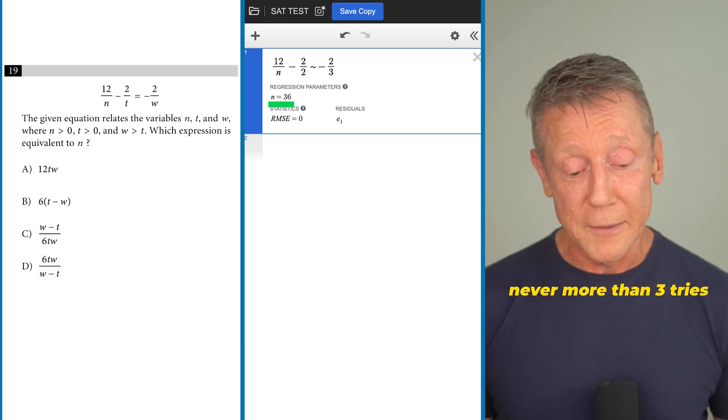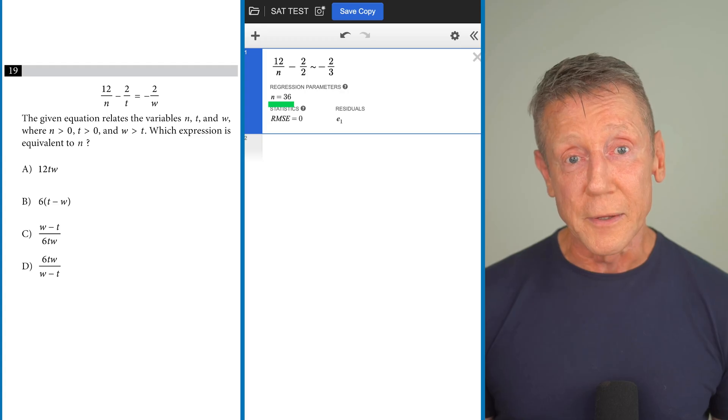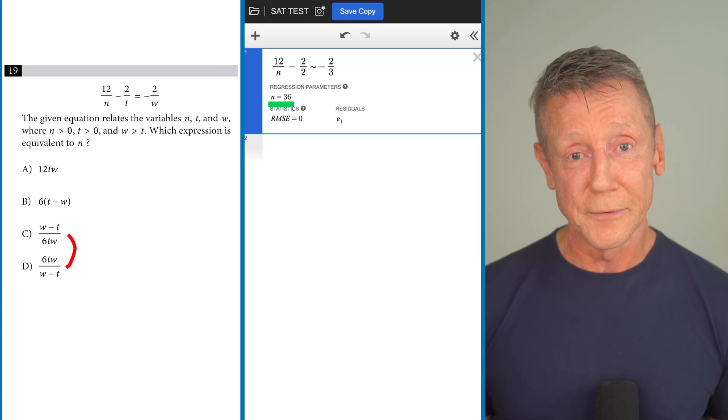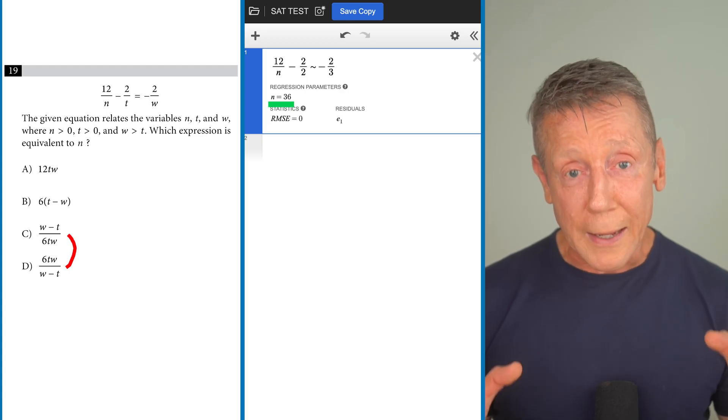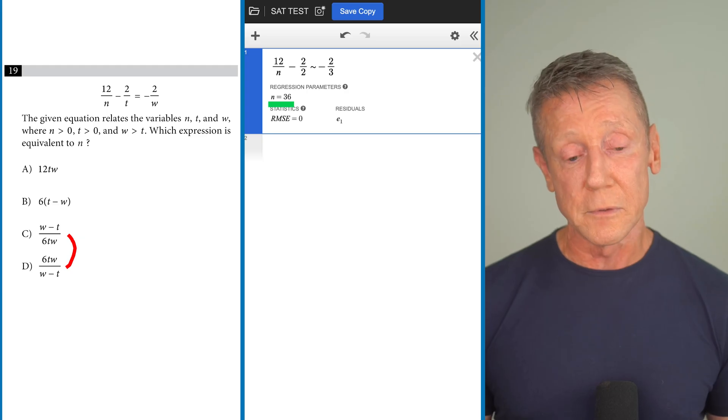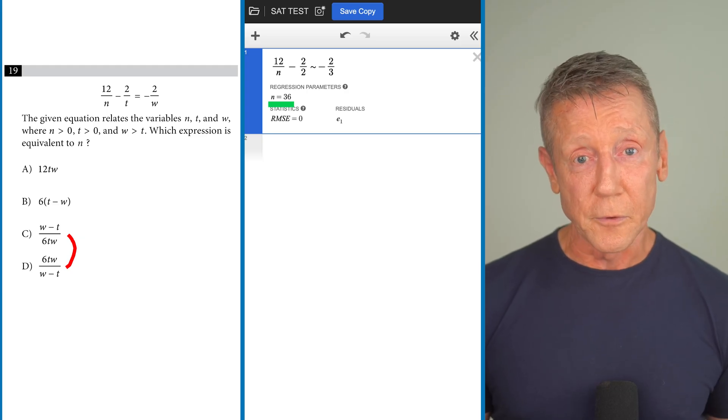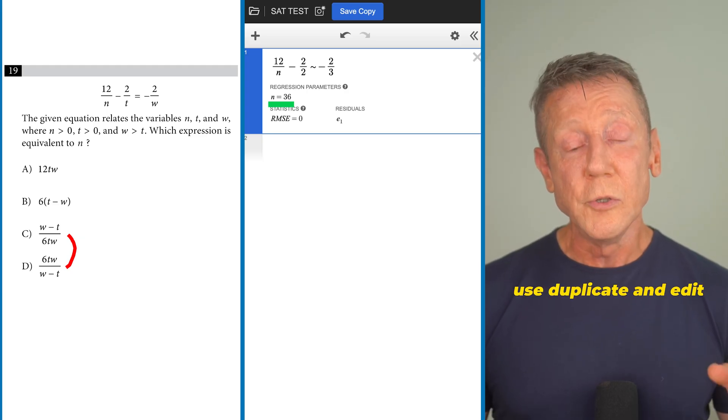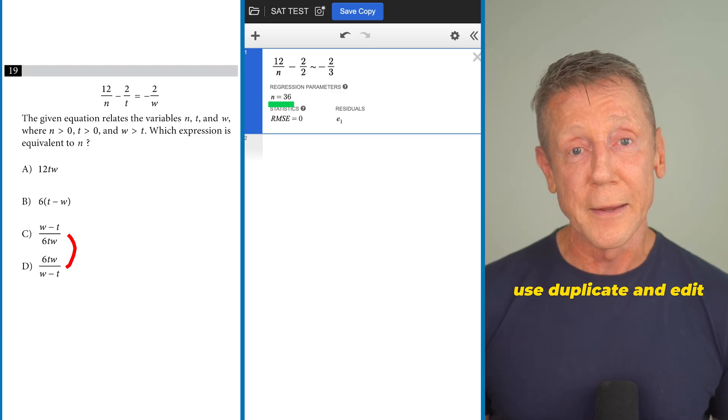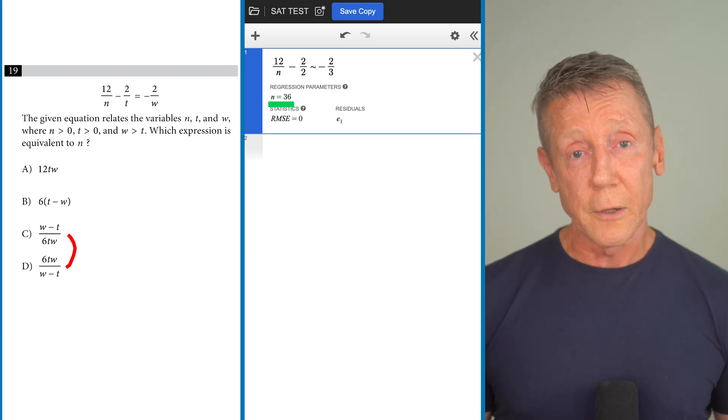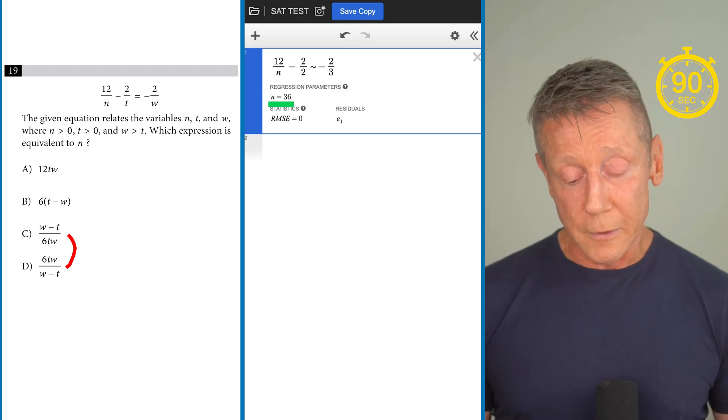And finally take a look at the last two answer choices. They are almost identical and this happens a lot on this test. So you type in the first one and if the answer doesn't work, duplicate, edit, and see what your next answer is. So it's really not that hard to get the right answer in under 90 seconds.